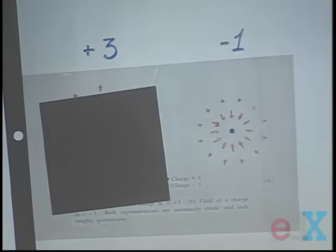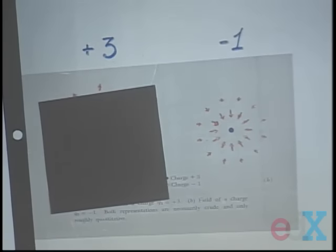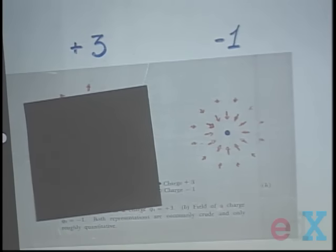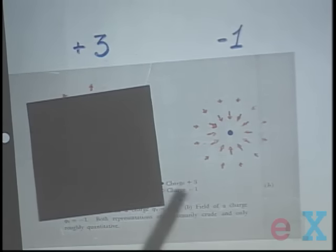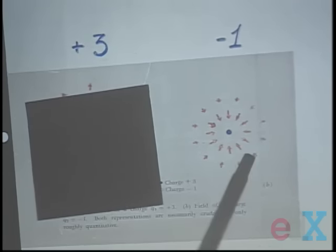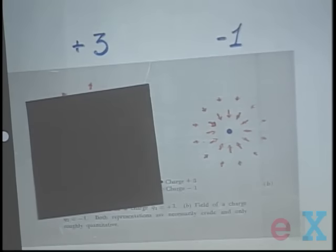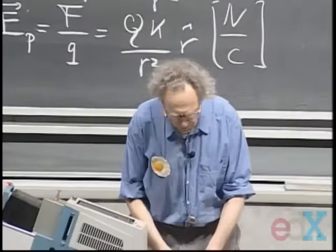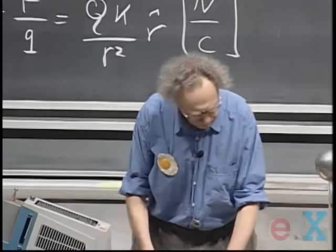Here I have another charge, minus one — it doesn't matter whether it is minus one Coulomb or minus micro-Coulomb, it's just a relative representation. The E field vectors are reversed in direction; they point towards the minus charge by convention, and farther out they are smaller. You have to go all the way to infinity for the field to become zero, because the one-over-R-squared field falls off, and you have to be infinitely far away to not experience any effect from the charge.